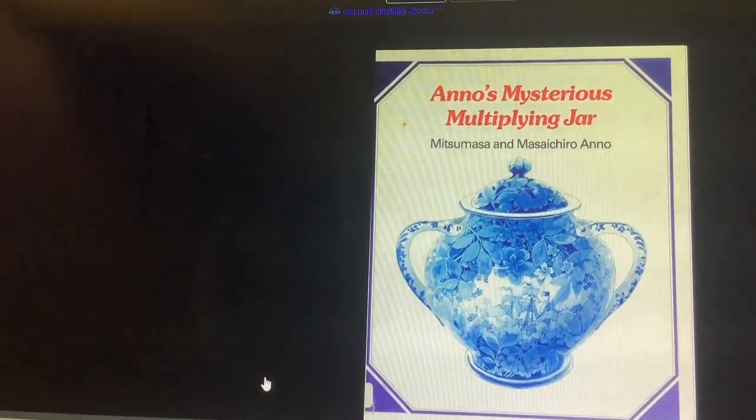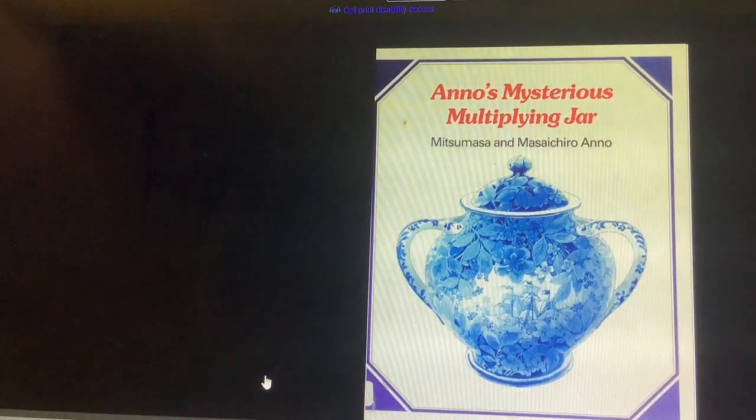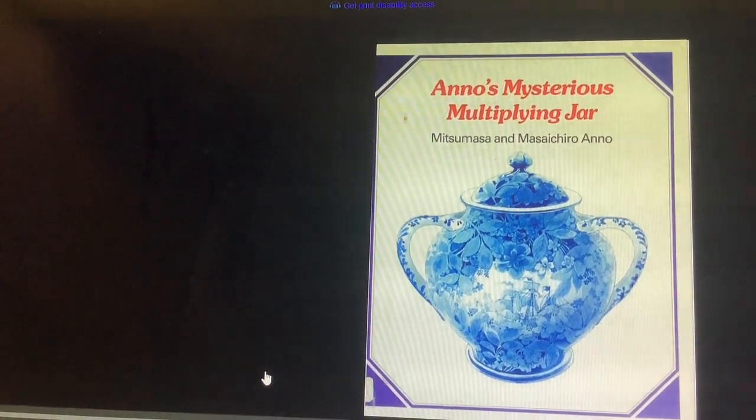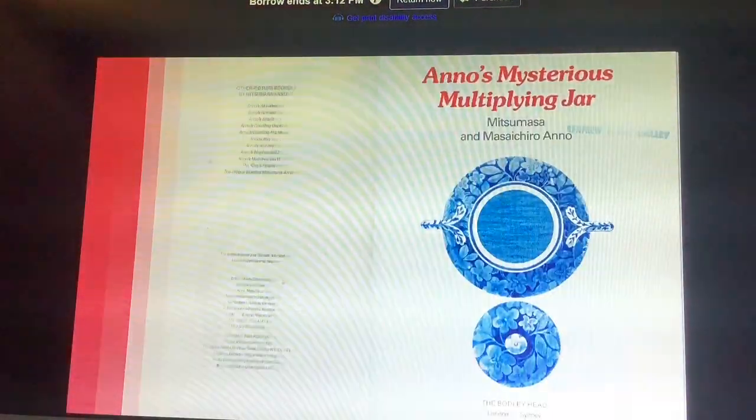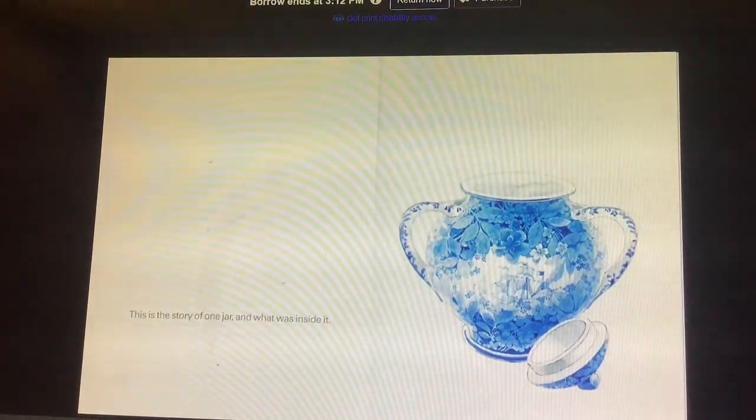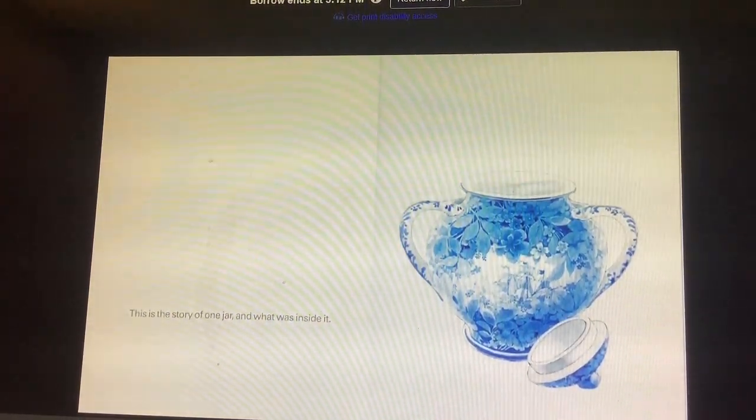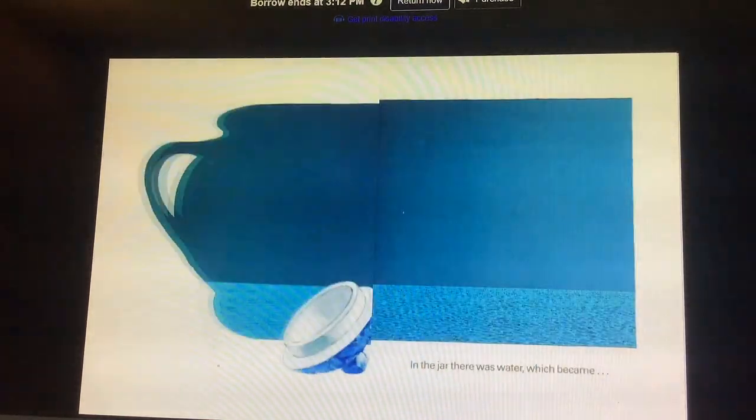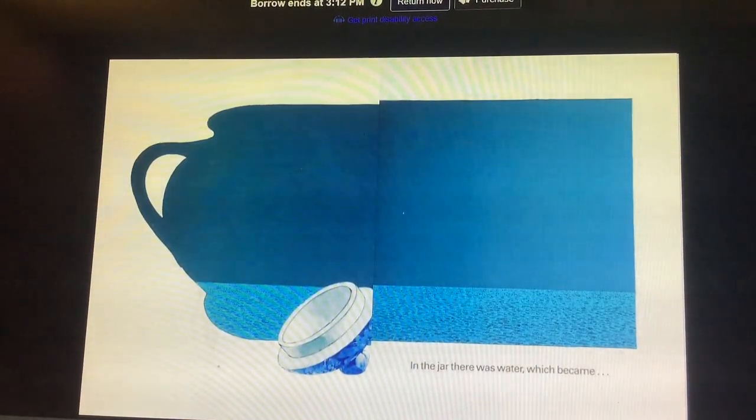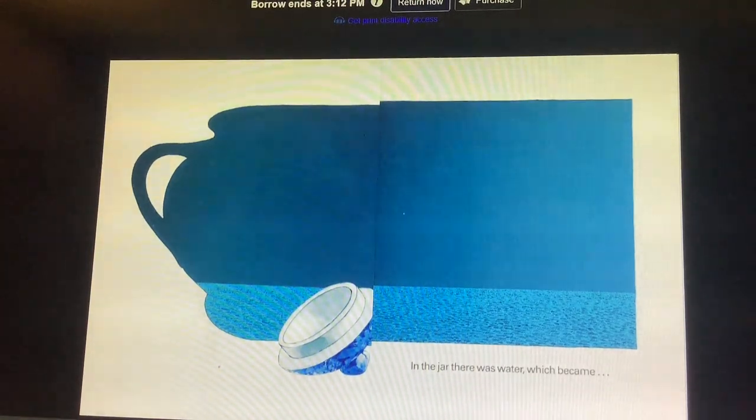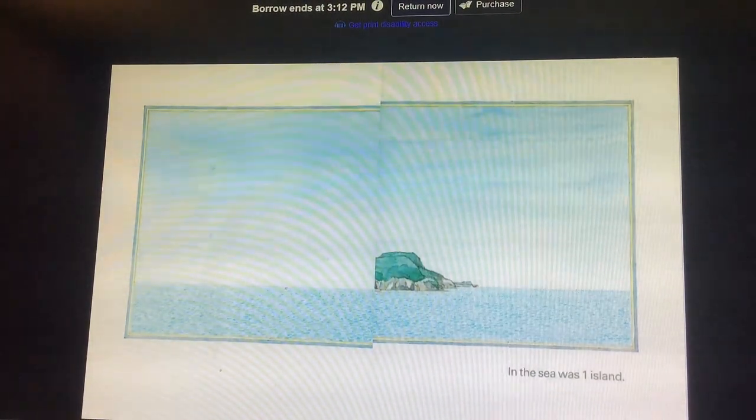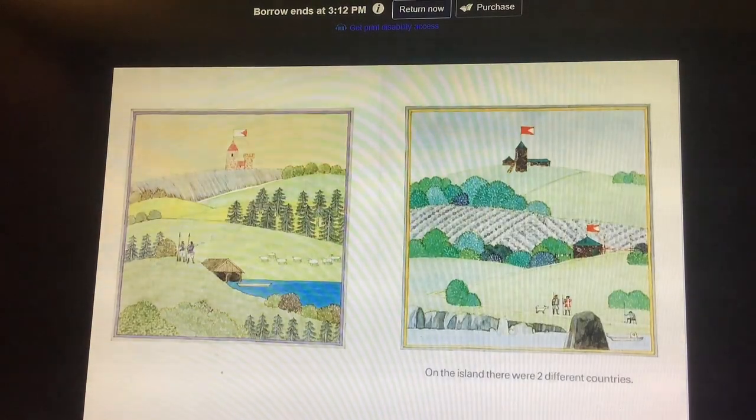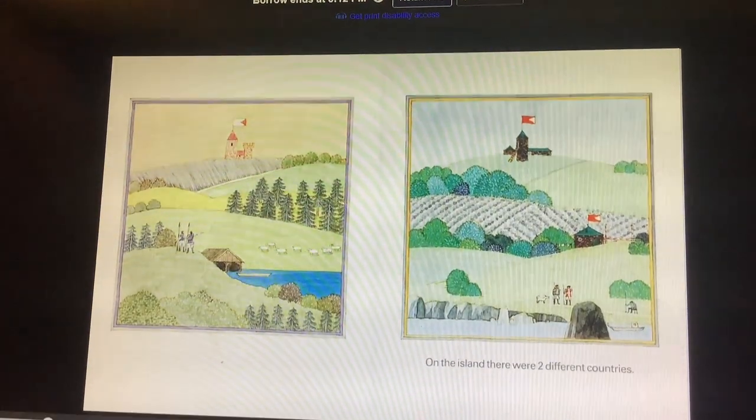Hi Year Four, this is Mrs Keeley and this is going to be our maths book to start off our multiplication and division topic and it's called Anno's Mysterious Multiplying Jar. This is the story of one jar and what was inside it. In the jar there was water which became a vast great sea. In the sea was one island. On the island there were two different countries.